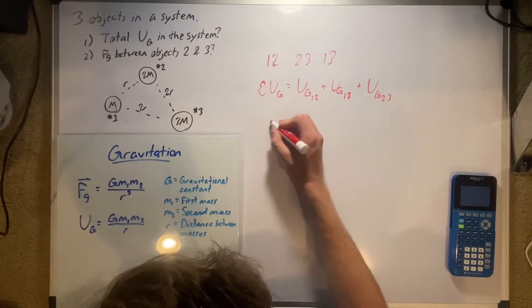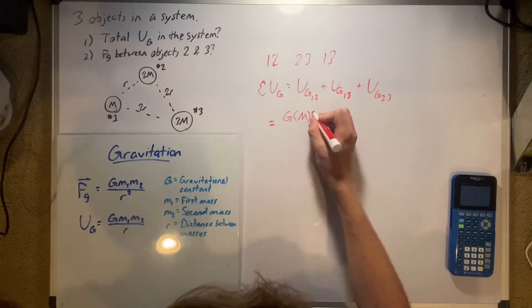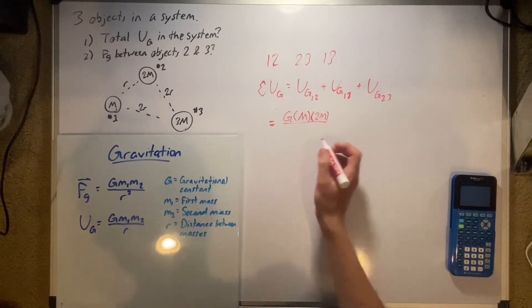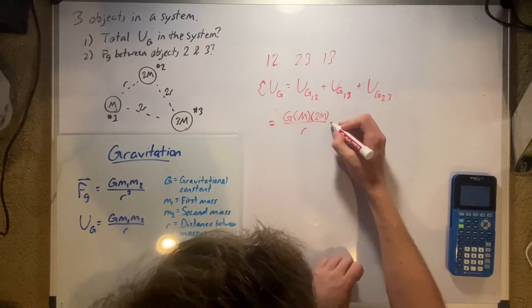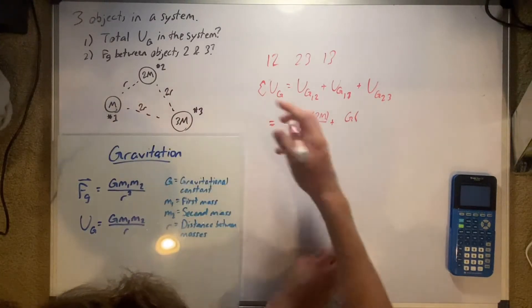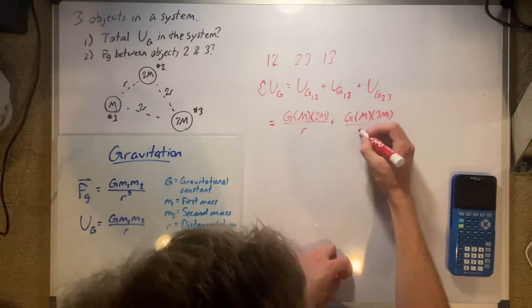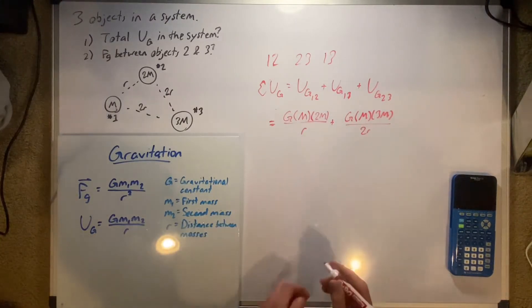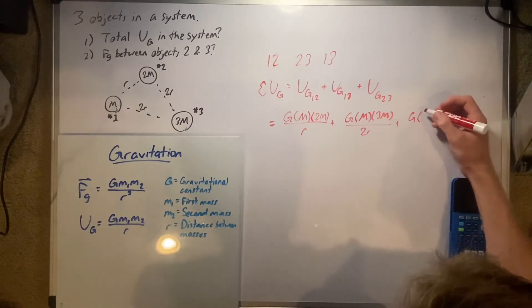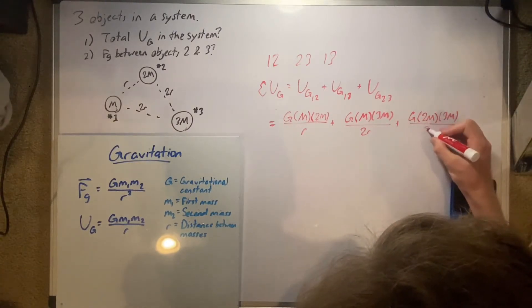So now we'll actually plug all of these into our equation here. We have equal to G mass one, which is just M, times mass two, which is two M, divided by the distance between two, which is R, plus G mass one times mass three, which would be M times three M, over two R, and then we'll have plus G, now two and three, so we'll have two M times three M over two R.